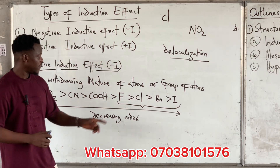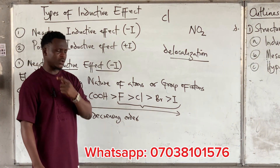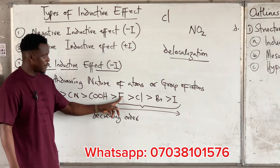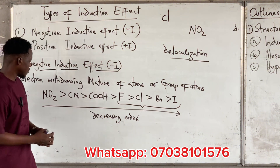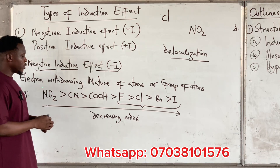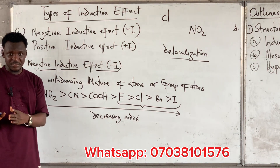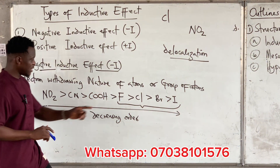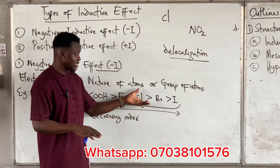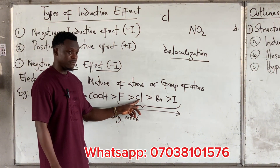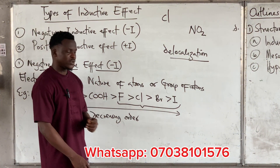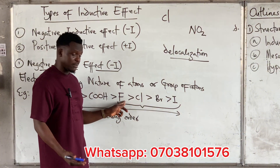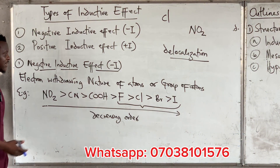The most common minus I substituents you should pay attention to are the halogens: fluorine, chlorine, bromine, and iodine. These four are highly electronegative. They are individual atoms. In terms of group of atoms, NO2 is an example. The halogens are most common under inductive effects — the others mostly appear under mesomeric effects. Fluorine is greater than chlorine, which is greater than bromine, which is greater than iodine. So if asked which exhibits the greatest minus I effect, the answer is fluorine, because it is the most electronegative.